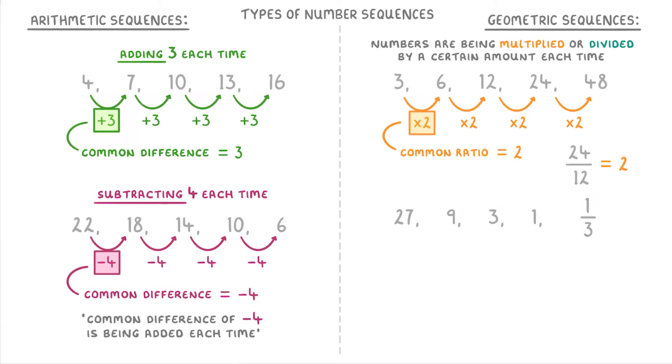To get from 27 to 9 we have to divide by 3, and to get from 9 to 3 we have to divide by 3 again, and then again to get to 1, and again to get to 1/3. So this is a geometric sequence because we're dividing by the same amount each time.